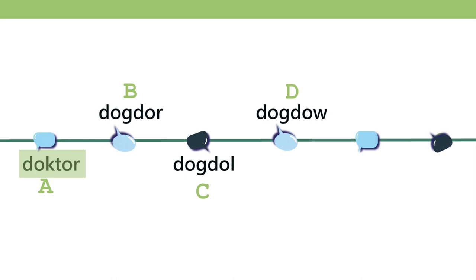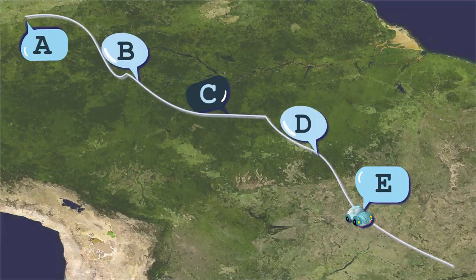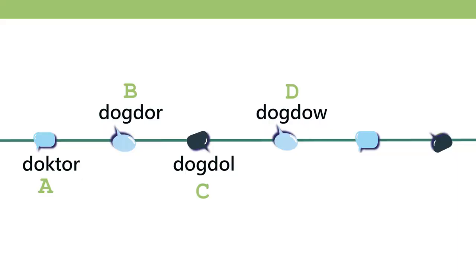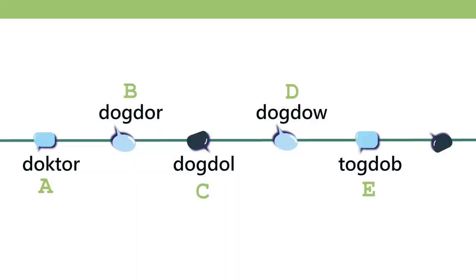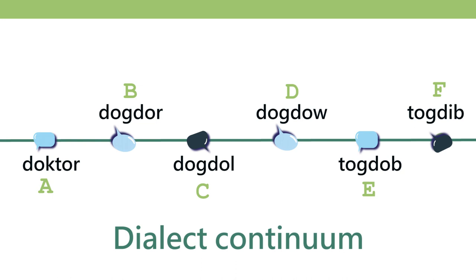Further south, the 'w' becomes a bilabial stop and the first sound becomes voiceless — 'talkdope' — and then even further south it becomes 'talkdeep.' By this point, speakers of dialect A and dialect F will not understand each other at all. This whole situation is a dialect continuum. The dialects in reality wouldn't shift as drastically, but the fact is that dialects of the same language are sometimes not easily mutually intelligible.